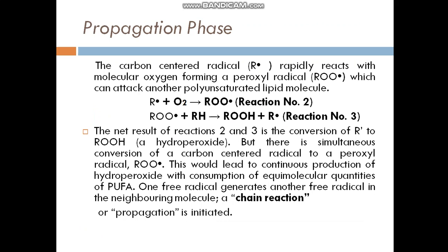Propagation phase: The carbon-centred radicals rapidly react with molecular oxygen, forming peroxyl radicals, which can attack another polyunsaturated lipid molecule. The net result of reactions 2 and 3 is the conversion of carbon-centred radicals to hydroperoxide, with simultaneous conversion of carbon-centred radicals to peroxyl radicals. This leads to continuous production of hydroperoxide with consumption of equimolar quantities of PUFA. One free radical generates another free radical in a neighbouring molecule — a chain reaction or propagation phase is initiated.